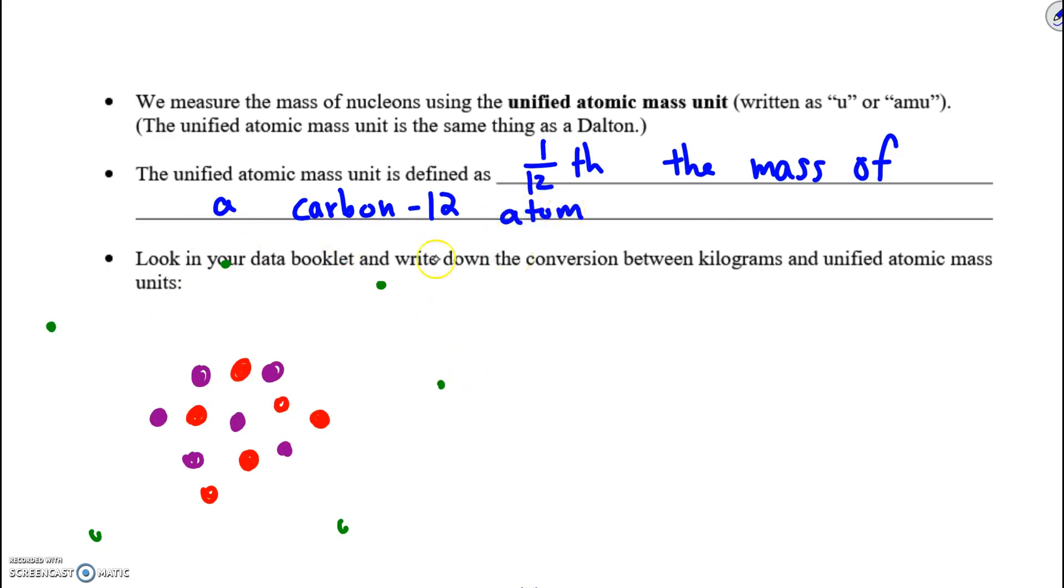The data booklet contains a conversion for getting between kilograms and unified atomic mass units. If we look in the data booklet, we see 1u equals 1.661 times 10 to the minus 27 kilograms. But then they also have 931.5 mega electron volts per c squared. Is this a unit for mass? Mega electron volts per c squared?